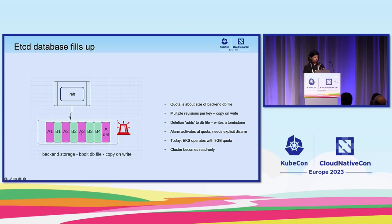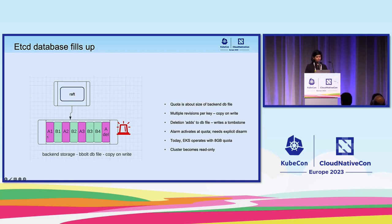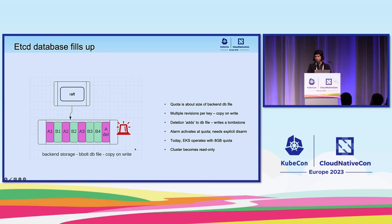A1, A2, A3 represent updates to a key, and A-del represents the key getting deleted. Things to note: when the file fills up, there are multiple revisions per key occupying space. This is copy-on-write semantics — every update to the key takes up a new page, and deletes work the same way. When the file hits the quota, an alarm is raised and must be explicitly disarmed. Today we run with an 8 GB quota, which is the maximum supported upstream. When the alarm hits, the cluster becomes read-only — any put operation cannot get in.